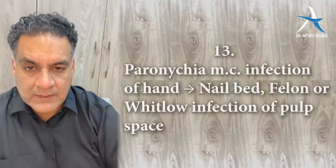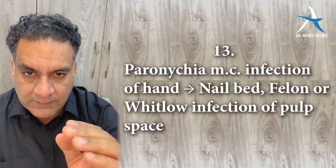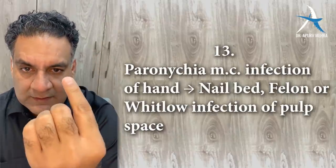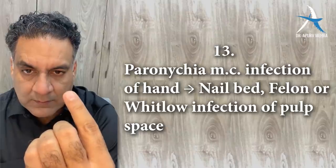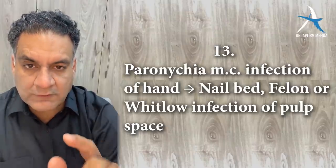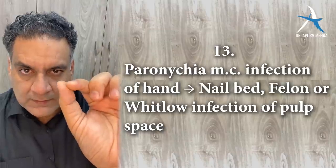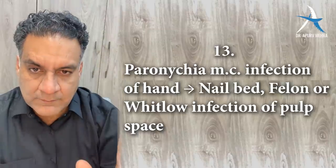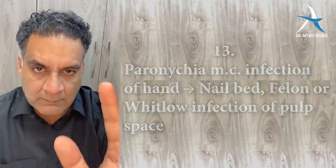Point number thirteen: paronychia is the most common infection of the hand — it infects the nail bed. Whereas felon (or whitlow) infects the pulp space. The organism is Staph aureus. Remember that.